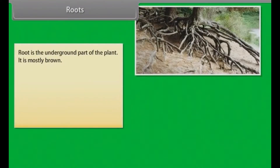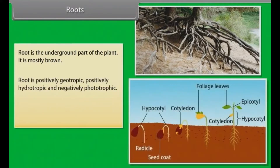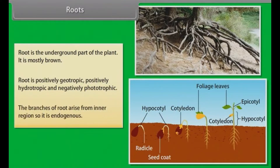Root is the underground part of the plant. It is mostly brown. Root is positively geotropic, positively hydrotropic and negatively phototropic.